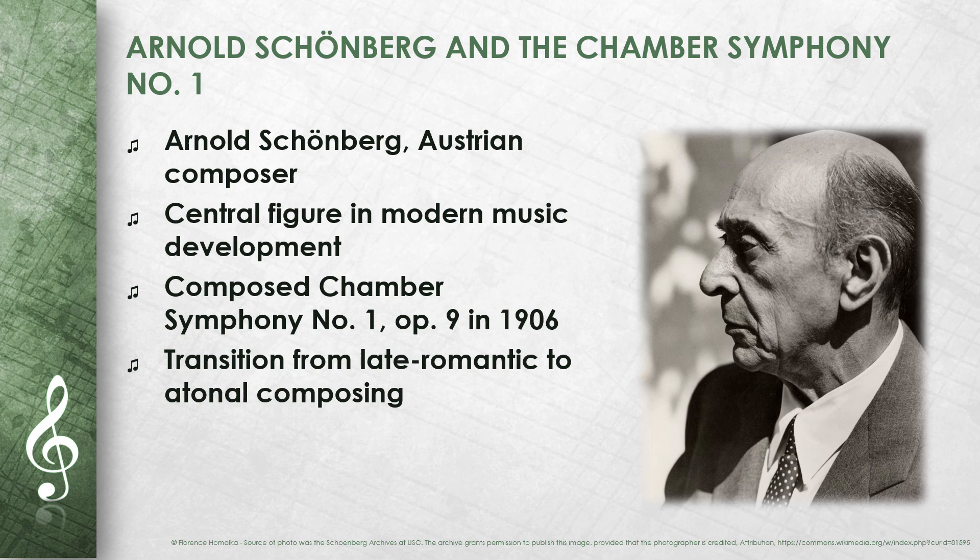His Chamber Symphony No. 1, Op. 9, composed in 1906, marks an important point in his musical career. This work was written for a chamber orchestra and demonstrates Schoenberg's transition from the late Romantic tradition to a freer, more atonal compositional style. The Chamber Symphony breaks with traditional structures and is known for its dense structure and innovative harmonies.